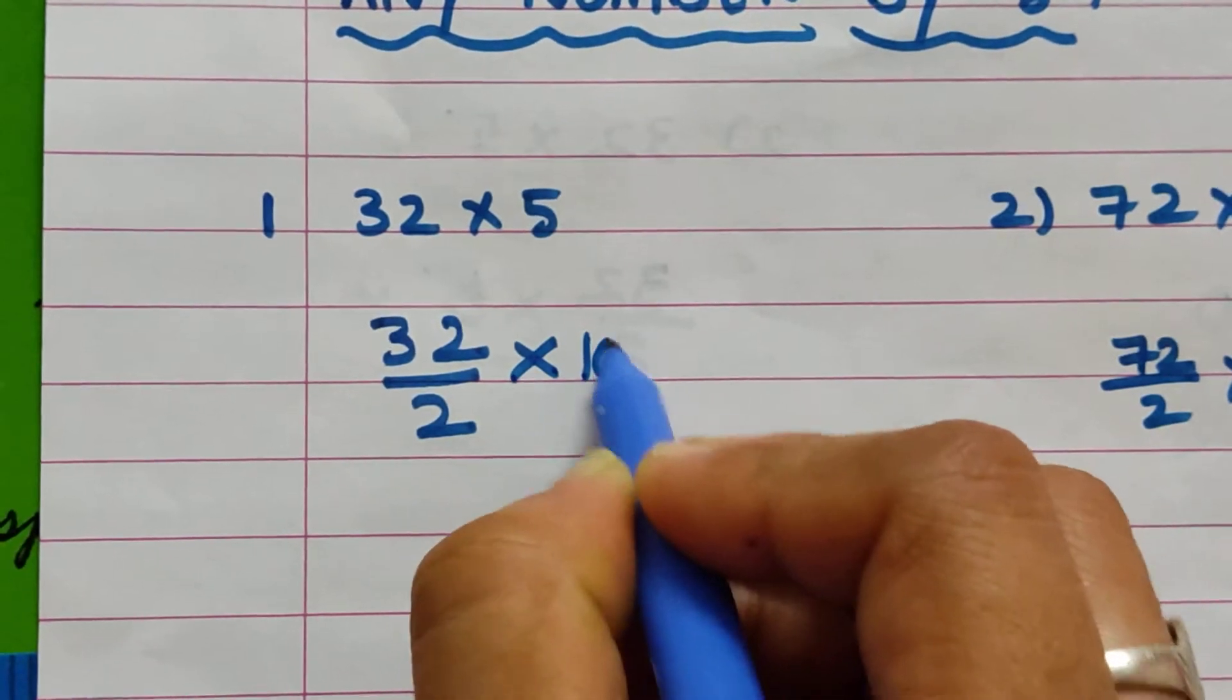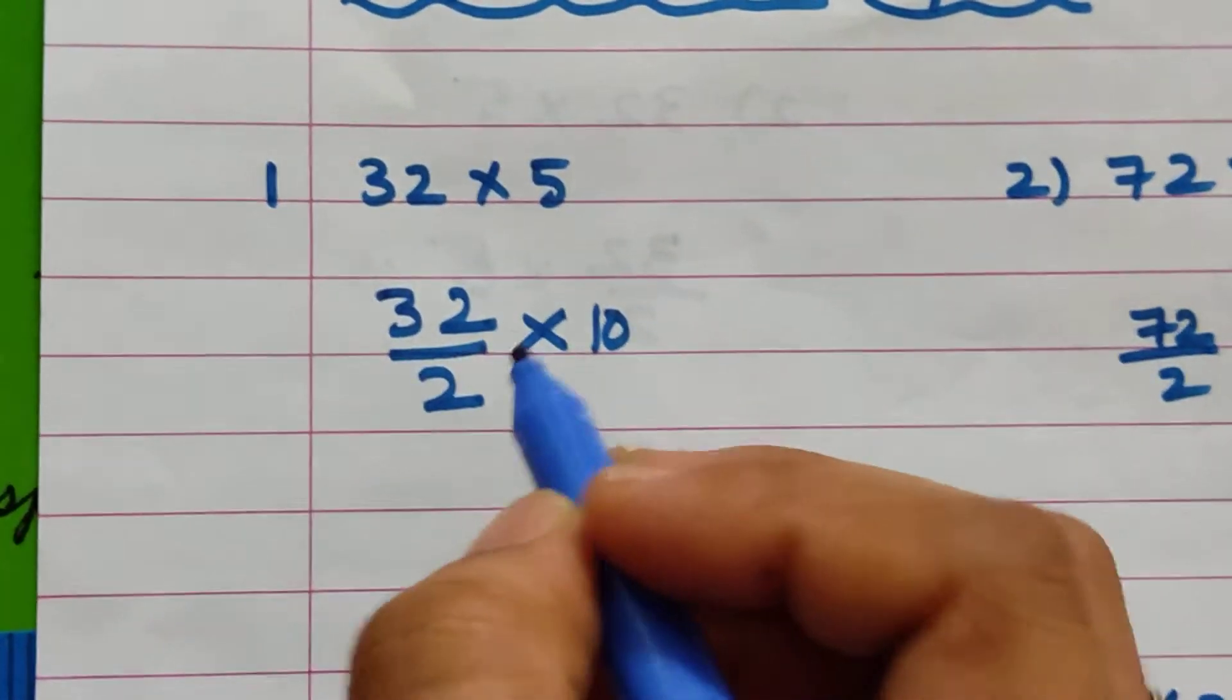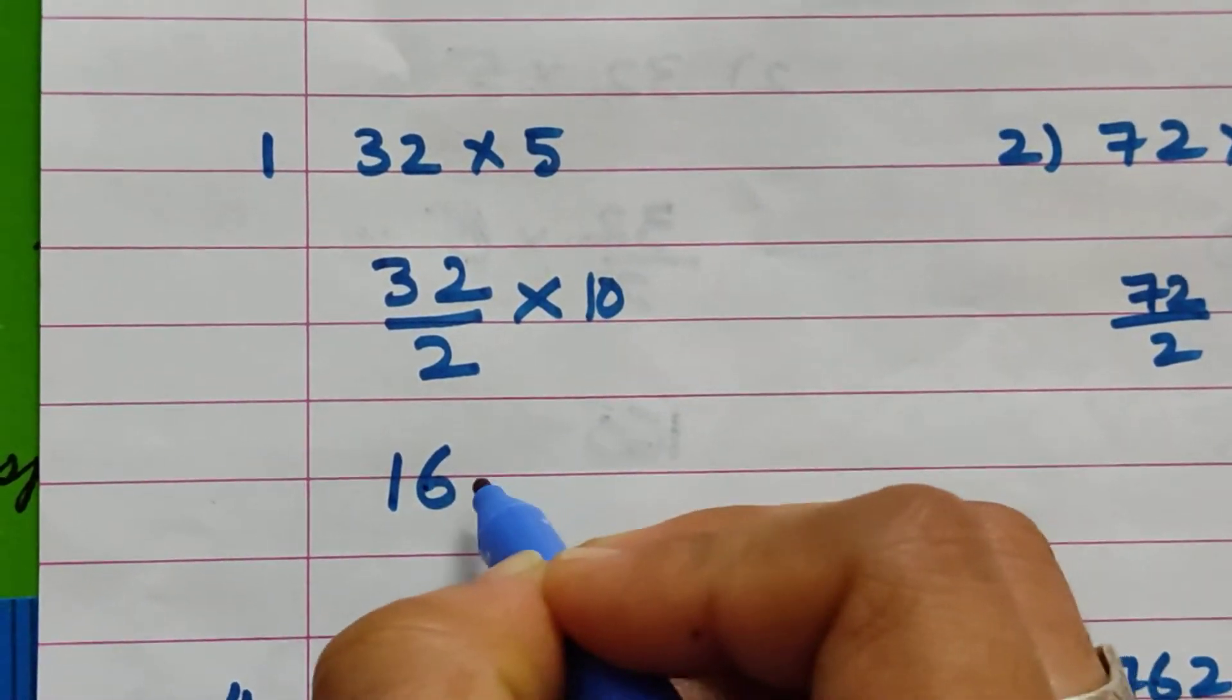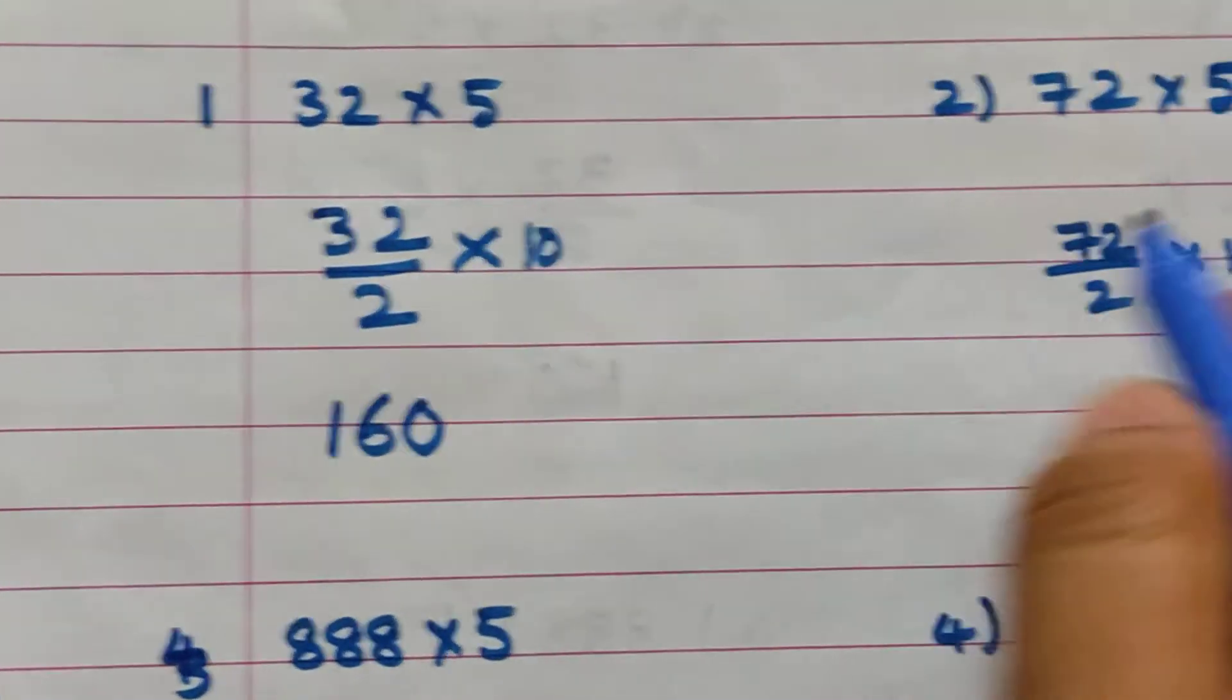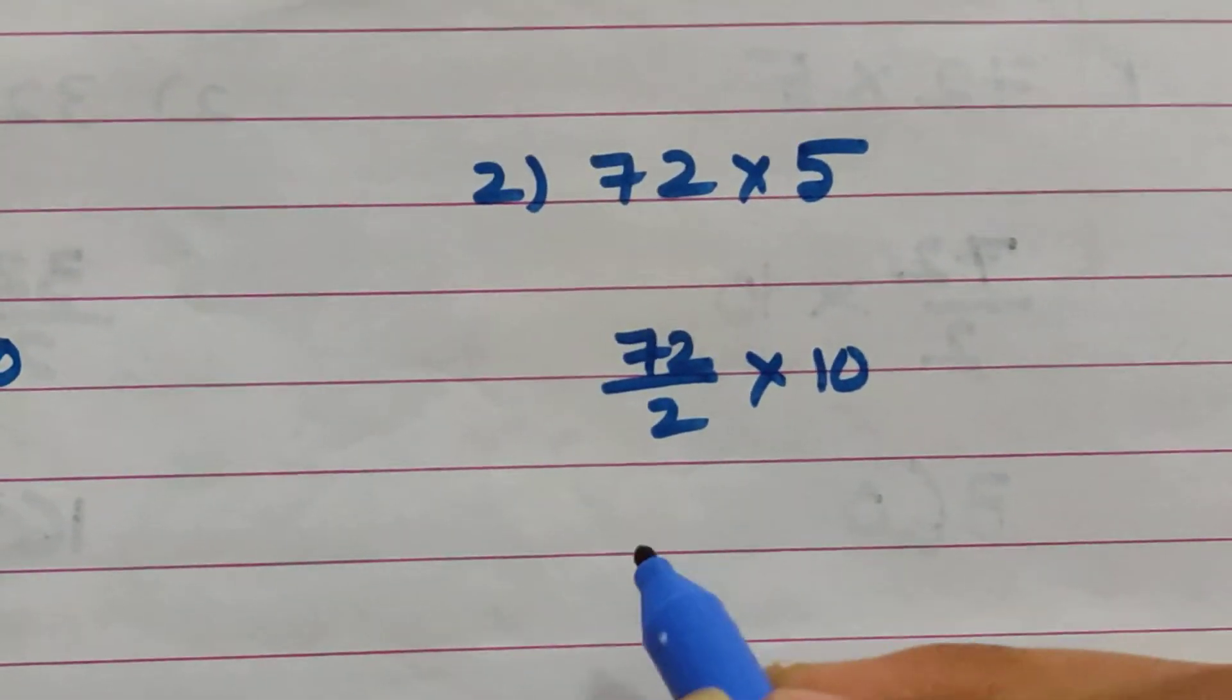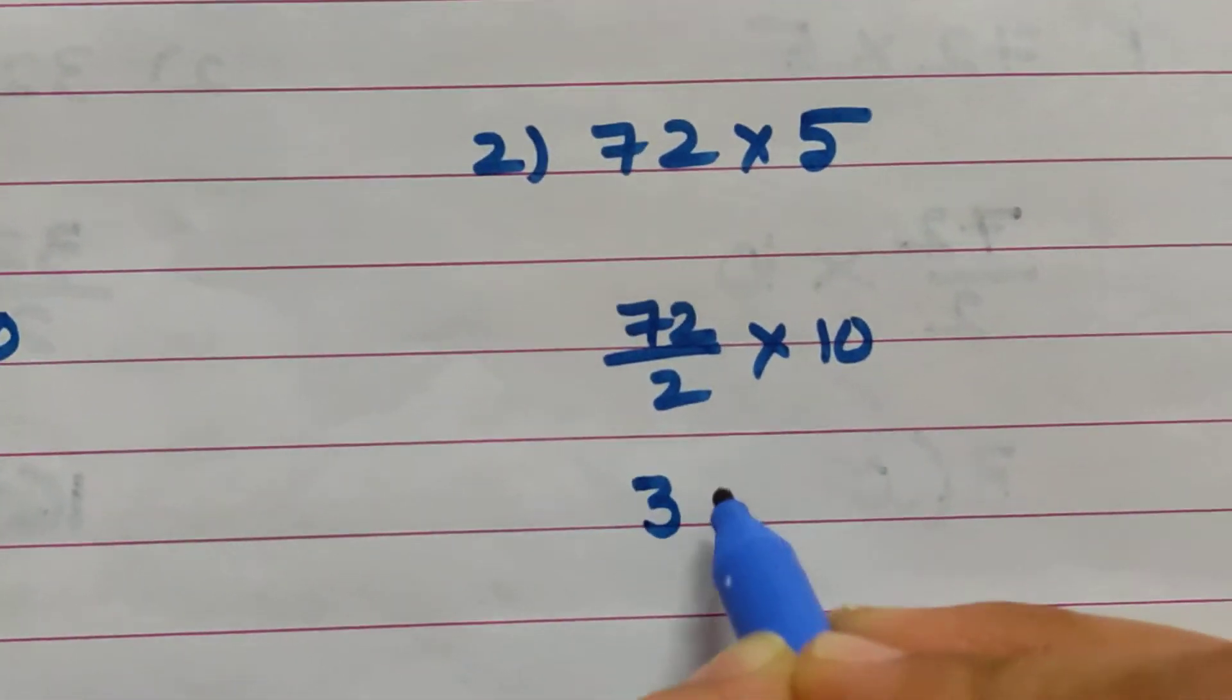...write 32 divided by 2 into 10. Using the two-table, we have to cancel: two ones are 2, two sixes are 12. Into 10 means add 0 only. That's it. Here I already wrote 72 by 2 into 10: two threes are 6, two sixes are 12, so add 0.